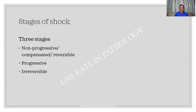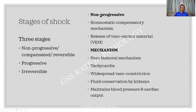There are different stages of shock — a definite question for you. There are three stages: non-progressive, progressive, and irreversible. The non-progressive is otherwise called compensated or reversible shock. Even if you lose 500 ml of blood, nothing will happen to your life. The body compensates because of the homeostatic mechanism, and there is a release of vasoexciter material causing peripheral vasoconstriction, allowing passage of blood to vital organs such as the heart and the brain. Neurohumoral mechanisms come into force: tachycardia, widespread vasoconstriction, fluid conservation by the kidneys, and maintenance of blood pressure by the heart.